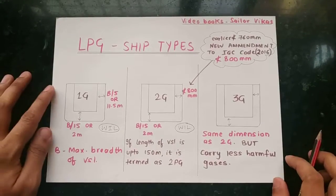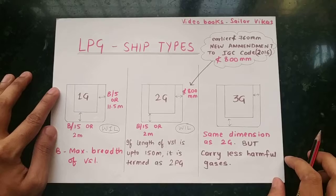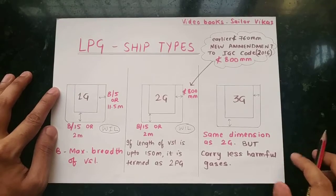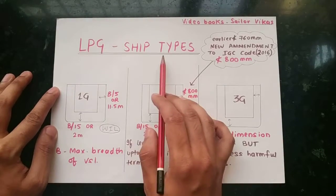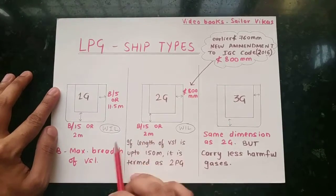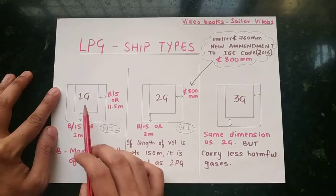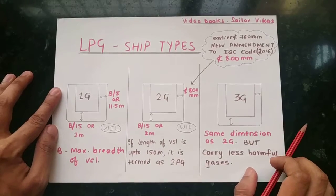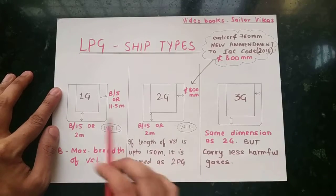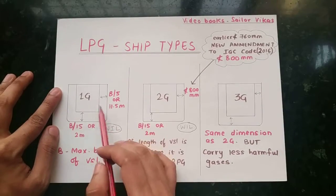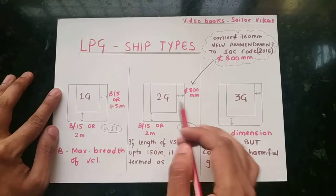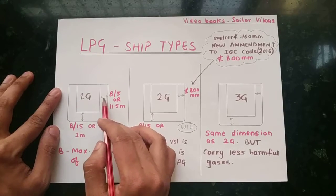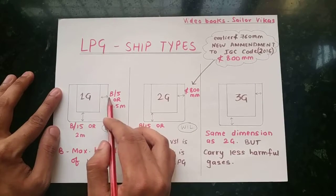Hello guys, so in today's video we will discuss the LPG ship types: 1G, 2G, and 3G. We will look at how to differentiate them, because they have different dimensions — specifically the distance between the cargo tank and the outside hull.